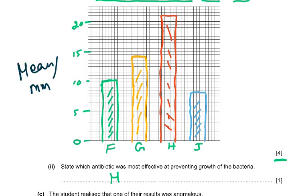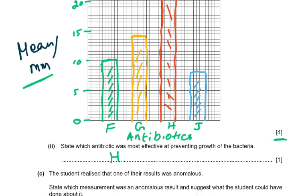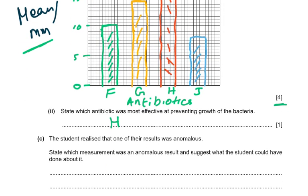Labeling the axis is very important. You should have written the antibiotics on the x-axis and 'mean diameter in millimeters' on the y-axis. To state which antibiotic is most effective, you just write H.